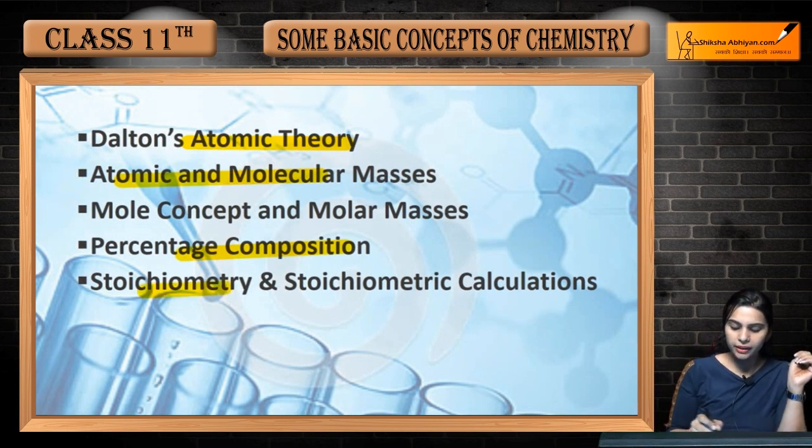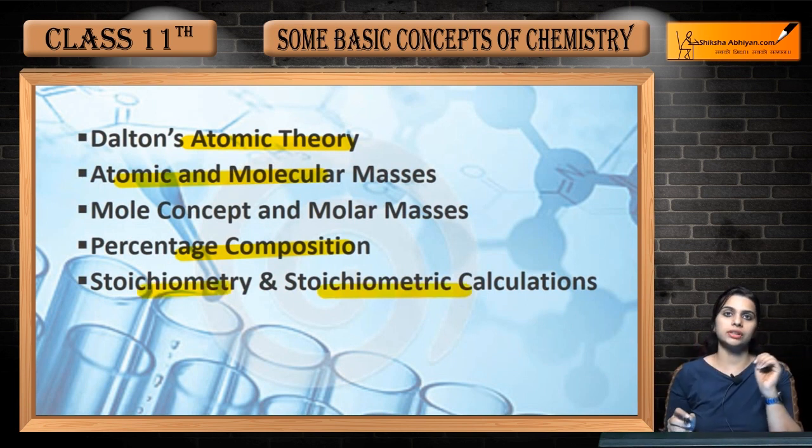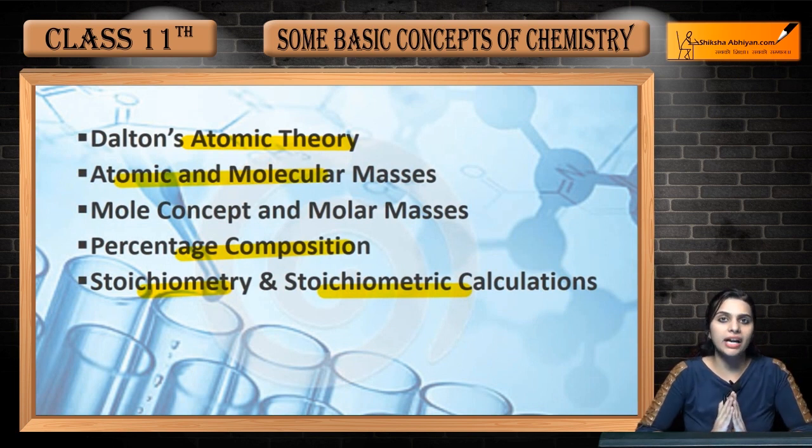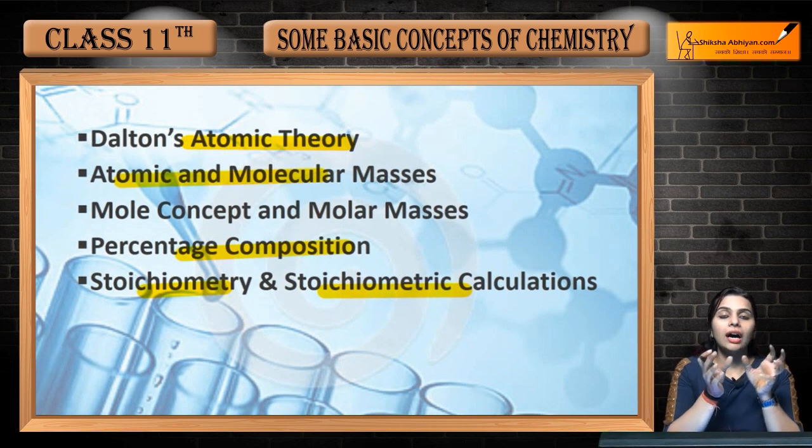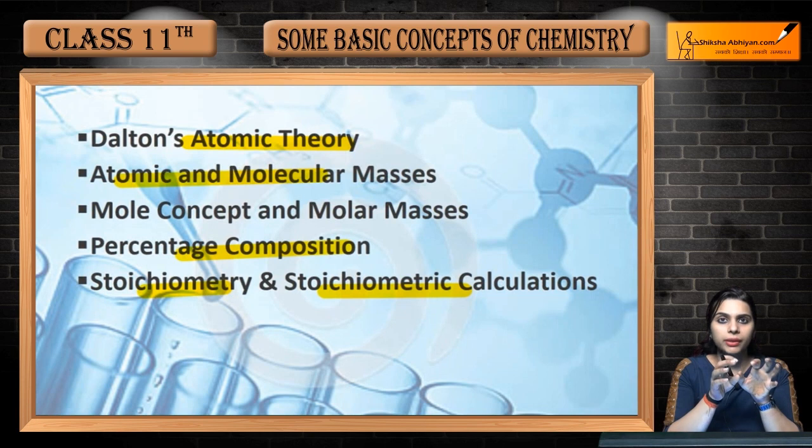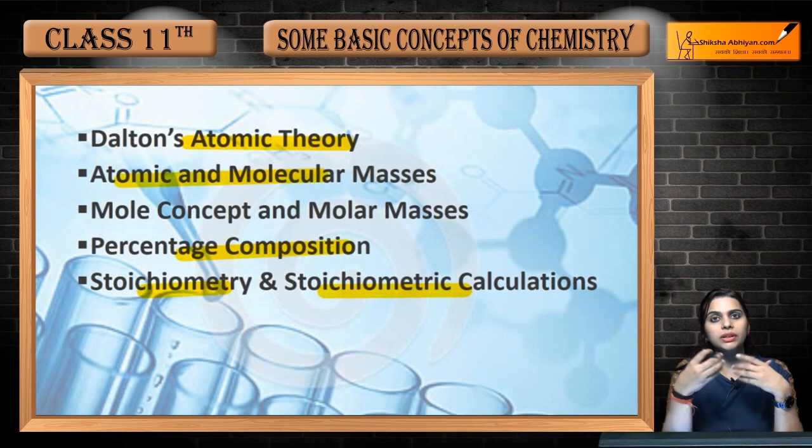Next is stoichiometry and stoichiometric calculation. When you have a reaction, you have two reactants and you get a product. Those reactants you are taking in many ways - that is stoichiometry - and how many moles and how many grams - that is stoichiometric calculation. We will study all these in the chapter in detail.